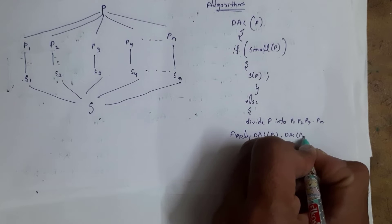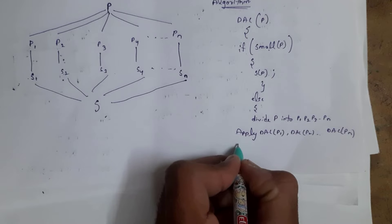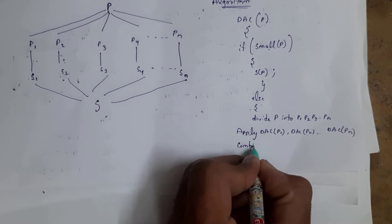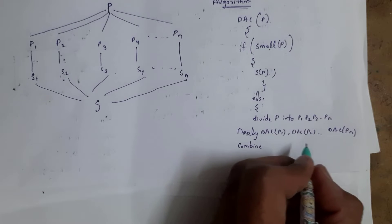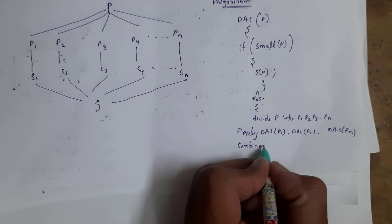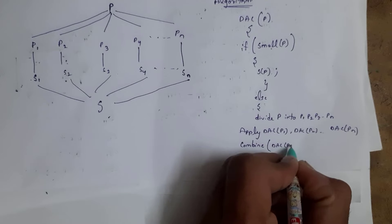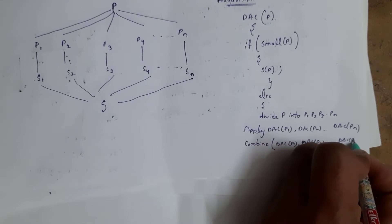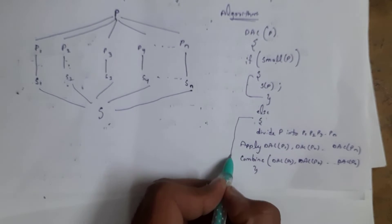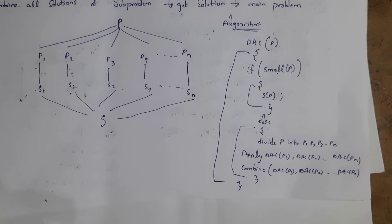Apply divide and conquer strategy to sub-problem P1, P2, and so on up to Pn. After finding solutions to these sub-problems, we need to combine all the solutions — combine divide and conquer of P1, P2, and so on up to Pn. This is the algorithm for divide and conquer strategy, also known as the general method.